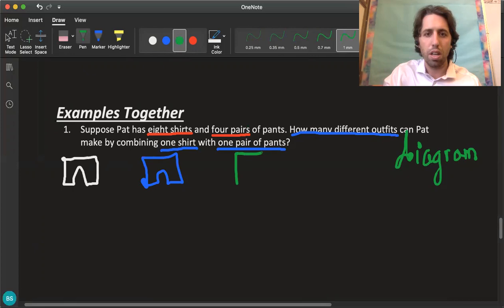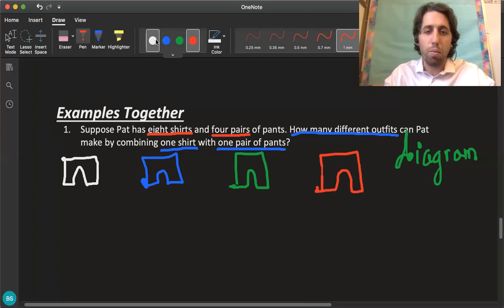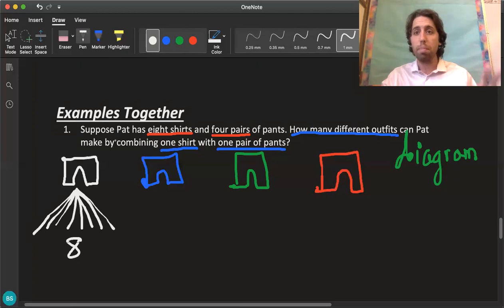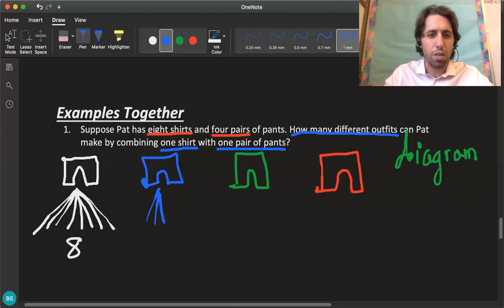So we know he has four pairs of pants so he can make outfits with the white pants, he can make outfits with the blue pants, he can make outfits with the green pants, he can make outfits with the red pants as well. Now rather than trying to draw a bunch of little shirts I might just draw, if he wears the white pants he can wear shirts with that, I know that he can wear eight different shirts so I'm just going to draw lines here, that's three, four, five, six, seven, eight so there's eight different combinations of white pants with each of the shirts. Same thing will happen here, he can wear each of those shirts with the blue pants, that's five, that's six, that's seven, that's eight.